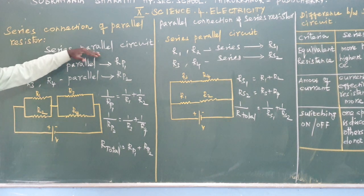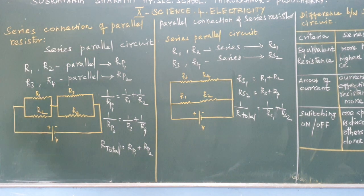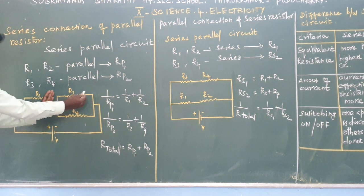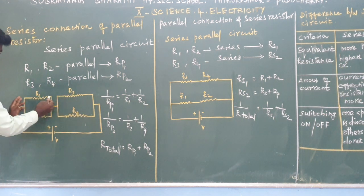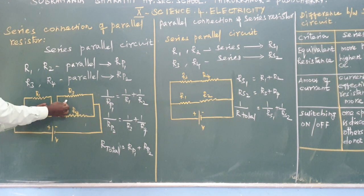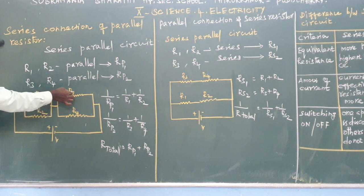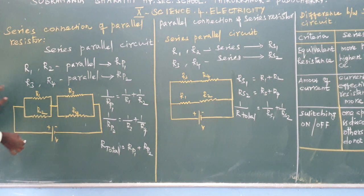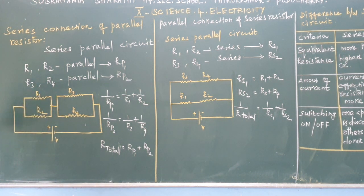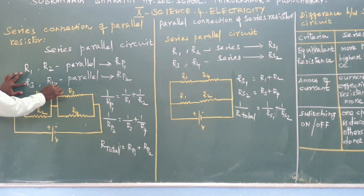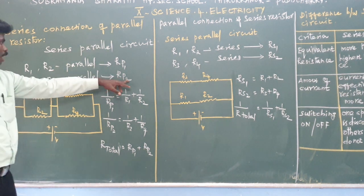So what do we do in a series-parallel circuit? If you call this one set of resistors and another set of resistors — how do you connect two resistors? They are connected in series, but the resistors within each set are connected in parallel. R3 and R4 resistors connected in parallel give us Rp2.